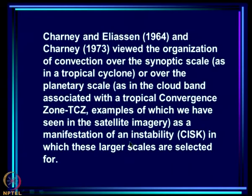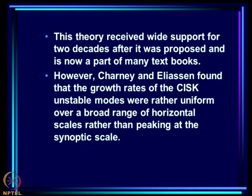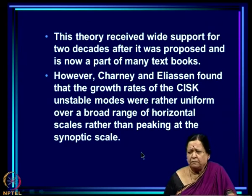Organization of clouds over synoptic and larger scales is possible because of this positive feedback between low-level convergence associated with cyclonic vorticity, the heating of the atmosphere by clouds, and the intensification of the low-level depression. Charney and Eliassen (1964) proposed that organization of convection over synoptic scales — as in a tropical cyclone — or over planetary scales — as in the cloud band of the tropical convergence zone — is a manifestation of Conditional Instability of the Second Kind, or CISK.